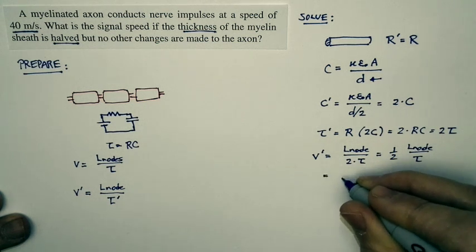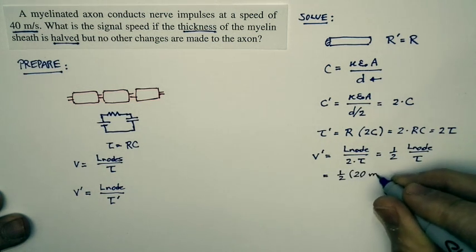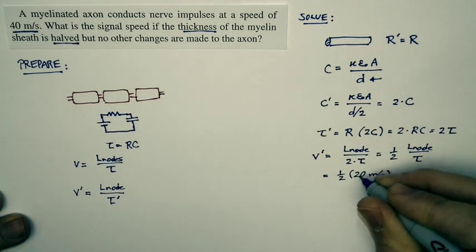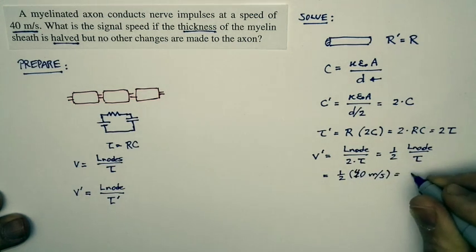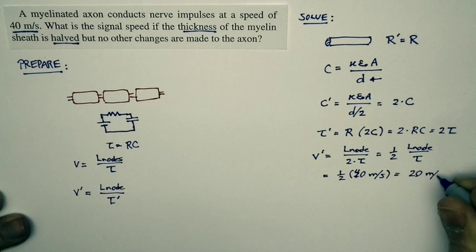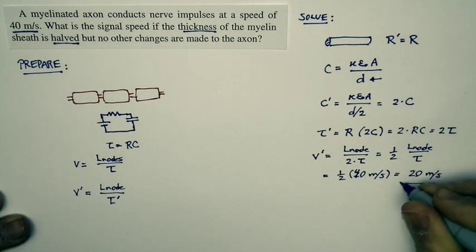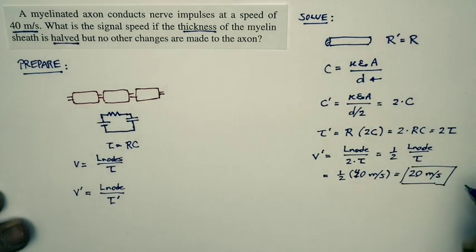So our new speed is one half of 40 meters per second. And so it's just 20 meters per second. So the new speed will be half what the old speed was.